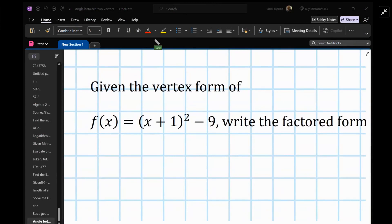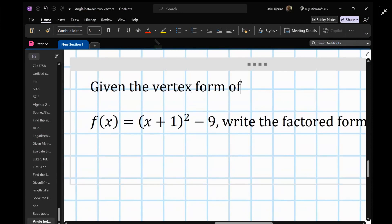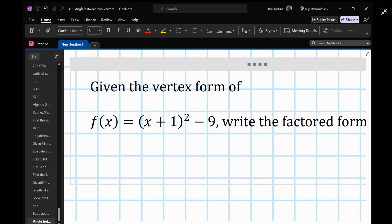All righty, so let's look at this problem. I hope you're doing well. So it says, given the vertex form of f(x) equals (x + 1)² - 9, write the factored form.